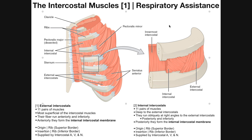In this video, we're going to be discussing the intercostal muscles, which are a set of three muscles that lie between adjacent ribs, as you can see right here.